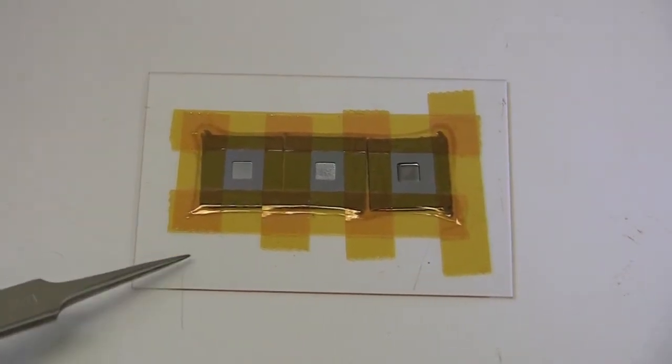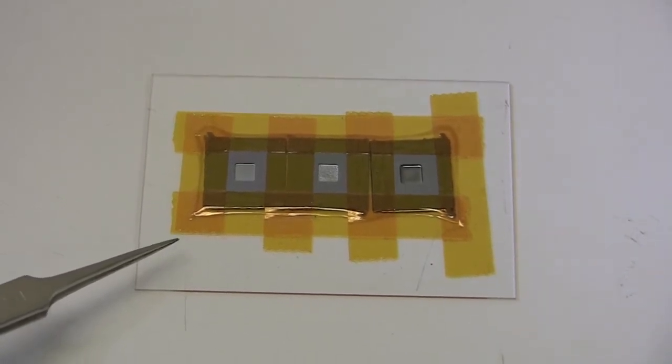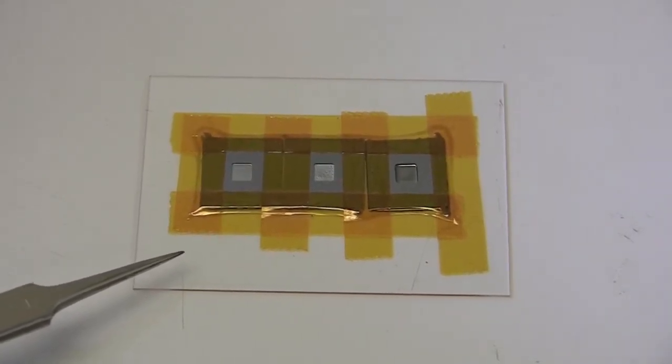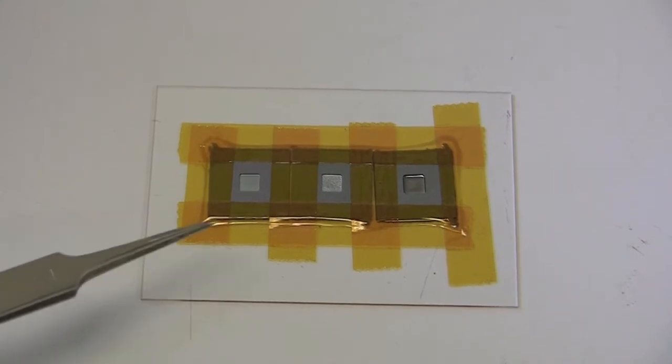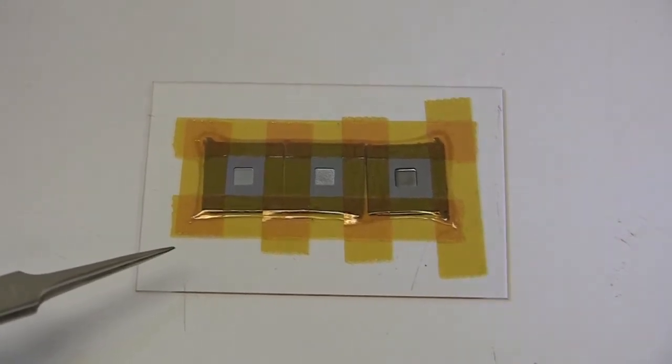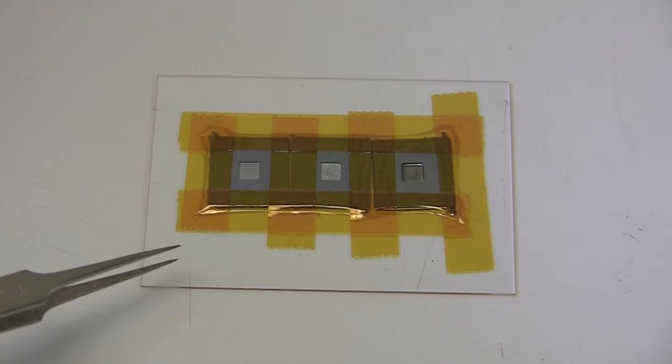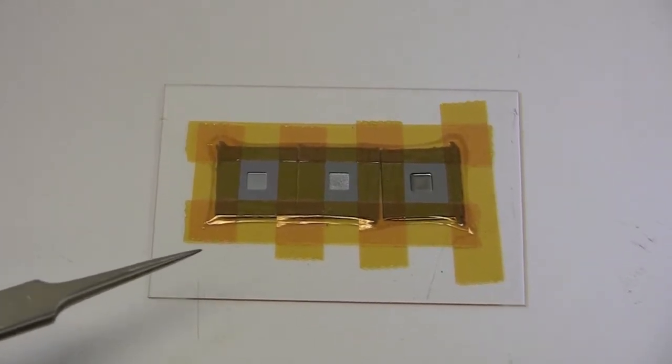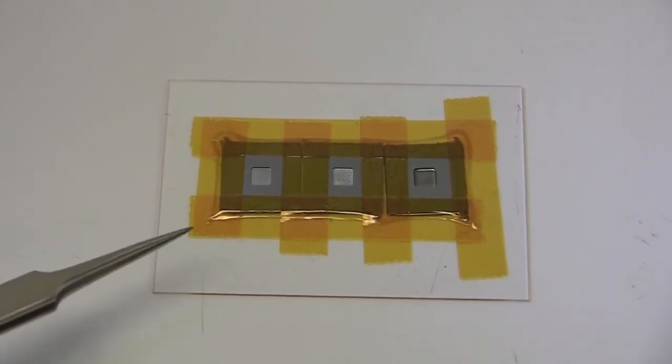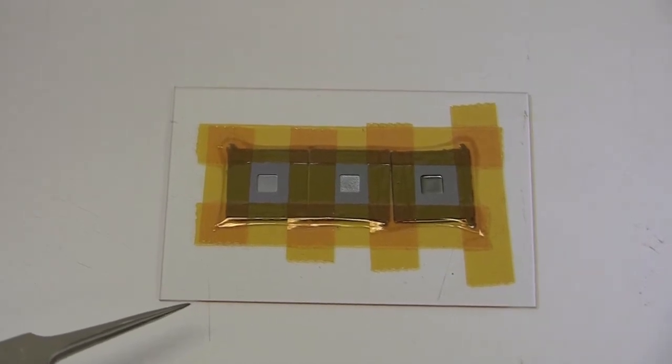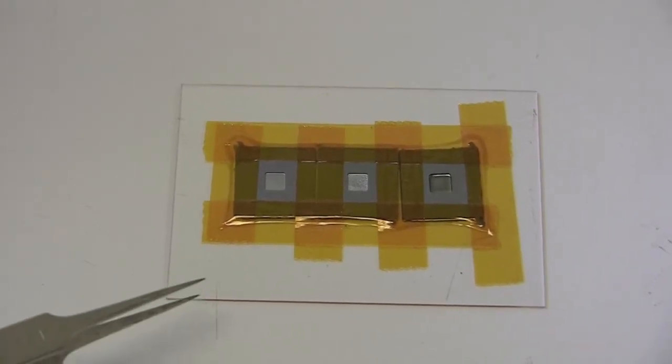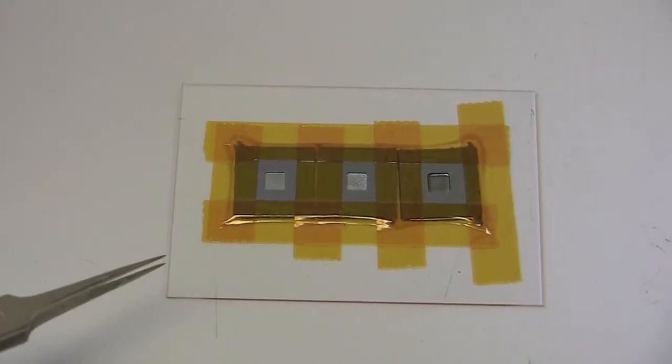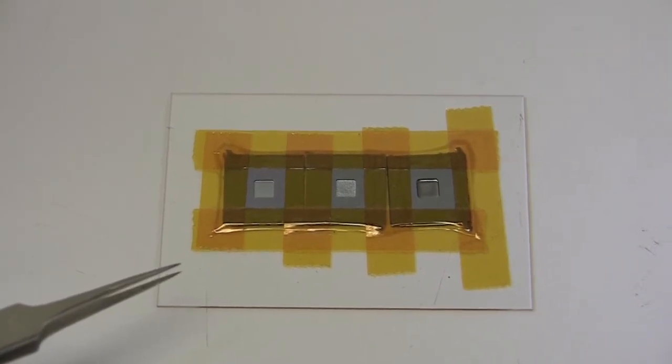Also notice that I used a glass substrate to hold all three chips. This is useful for two reasons. One, glass is not attacked as much as silicon in xenon difluoride. Two, this makes it very easy to pick up this sample and place it in the chamber quickly, and also remove it from the chamber quickly. This is important because we want to minimize the amount of moisture that gets absorbed into the chamber.